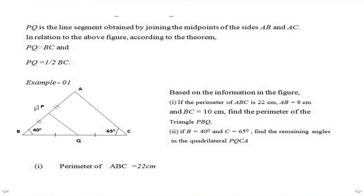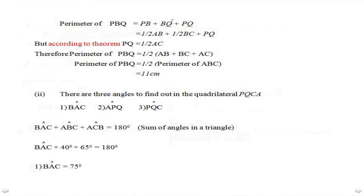According to the theorem, we can say PBQ equals half of AC. Therefore, the perimeter of triangle PBQ can be written as half of the perimeter of triangle ABC. Since the perimeter of triangle ABC equals 22 cm, the perimeter of triangle PBQ can be obtained as 11 cm.